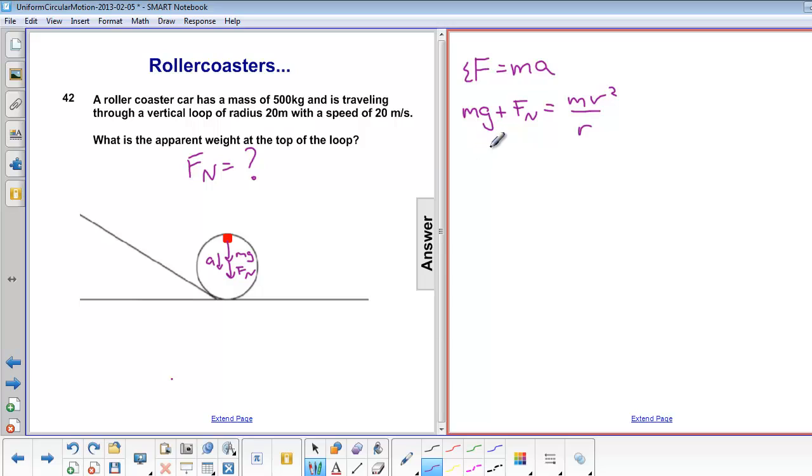We're looking for normal force, so we need to subtract mg from both sides. Normal force is equal to mv squared over r minus mg.